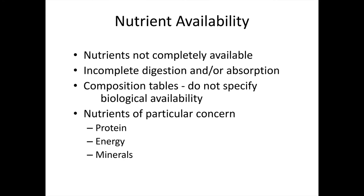In terms of nutrient availability, once we've determined the nutrient composition of a feedstuff, it's important to recognize that those nutrients are not completely available. In general, there is going to be incomplete digestion and/or absorption. For example, a protein may not be 100% digested down to free amino acids and small peptides, and the amount available may exceed the absorption capacities of the gut. A limitation of nutrient composition tables is that they don't specify the biological availability of a feedstuff. Nutrients of particular concern are protein, energy, and minerals.